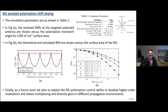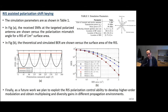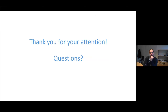We provide two different schemes: one with best performance but requiring polarization mismatch tracking and correction, and one with slightly worse performance but no need for tracking and correction. As future work, we plan to exploit the full polarization control ability to develop higher-order modulation schemes and different communication systems that could offer multiplexing gain and diversity gain in the degrees of freedom offered by polarization. Thank you very much for your attention.